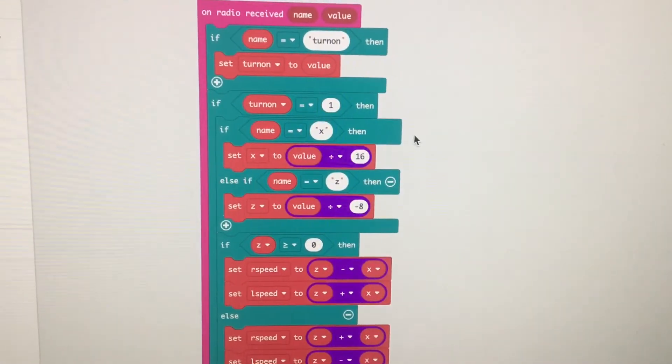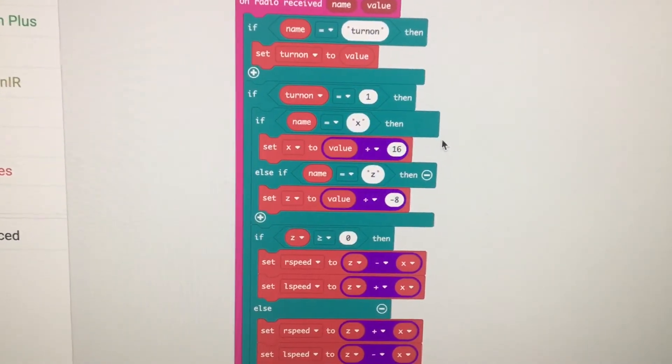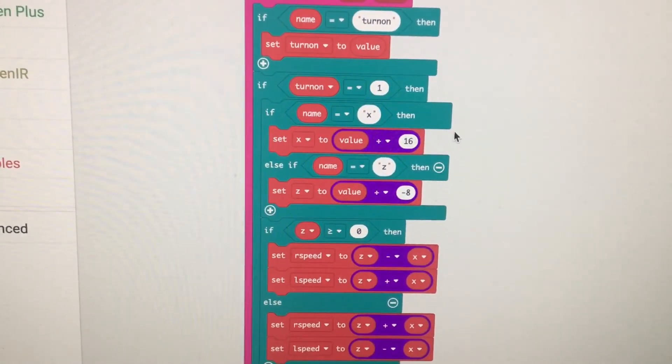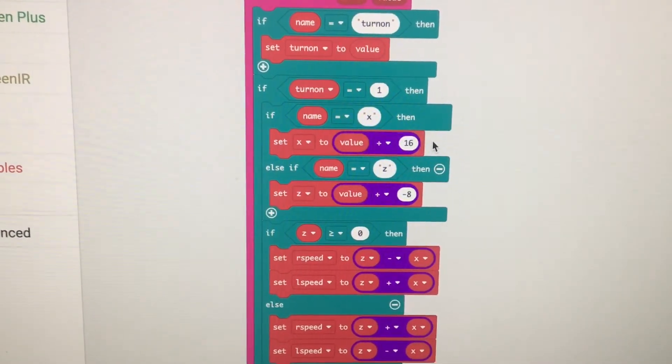If the variable received is x, then set the x value to the value specified. This will be used to turn the car right or left. I divide it by 16 to scale it down to lower numbers.